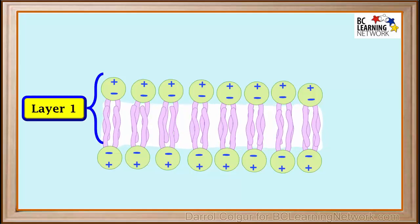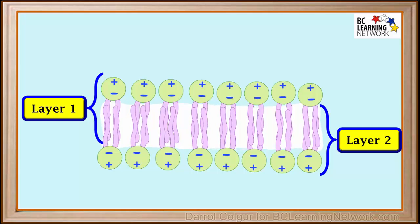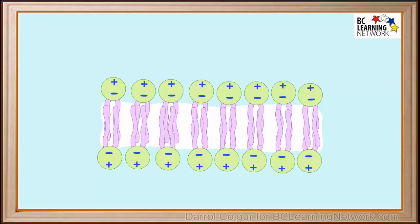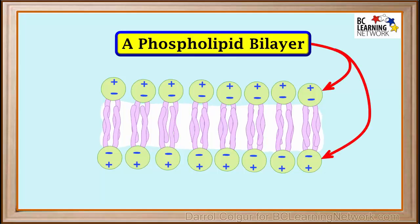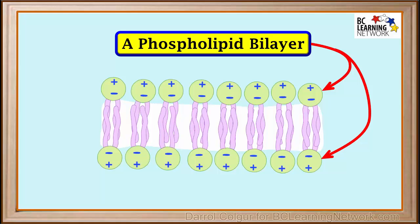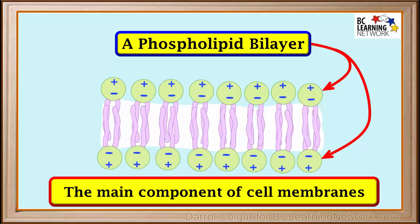They tend to form two layers: layer 1 on top and layer 2 on the bottom. Because it has two layers joined together, this is called a phospholipid bilayer. As you'll see later in this course, phospholipid bilayers form the main components of cell membranes.